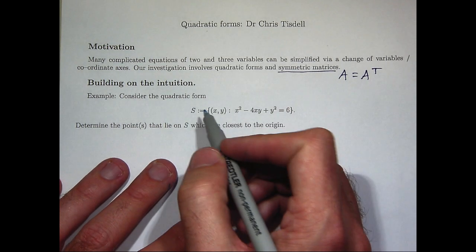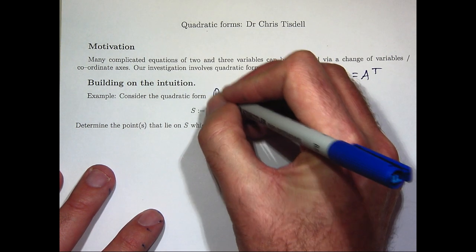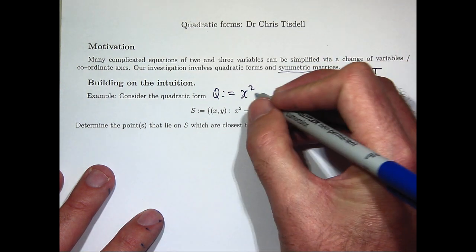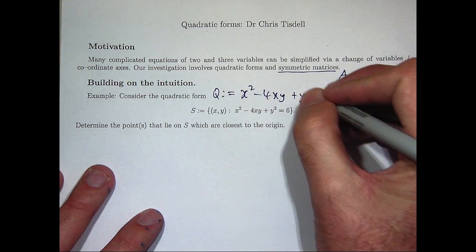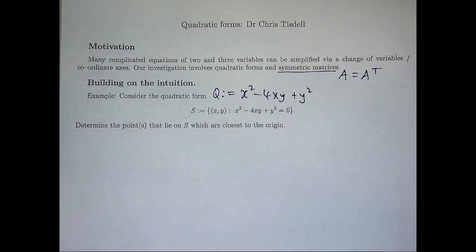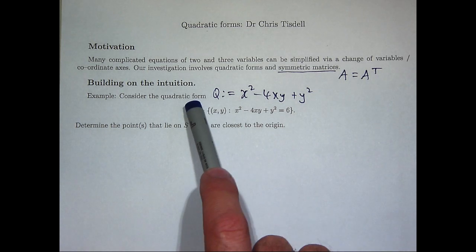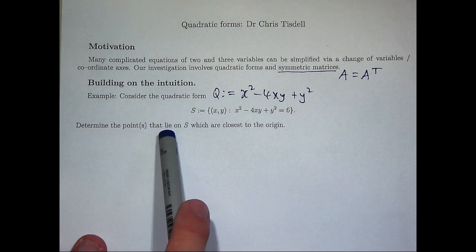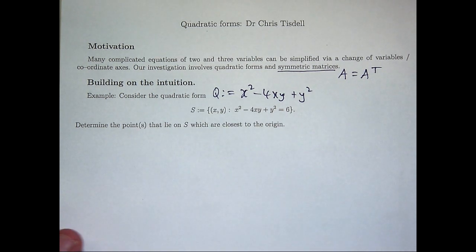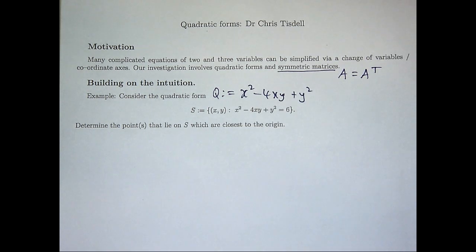Let's consider the following example. Consider this quadratic form here. The quadratic form Q is quite a complicated function. We're asked to consider the set of points S where Q equals 6, and determine the points that lie on this curve which are closest to the origin. The idea is to write Q in a simple form through a change of variables, then sketch the curve Q equals 6 in that new coordinate system, and relate it back to the original XY plane and coordinate system.